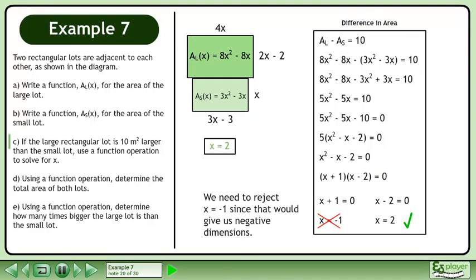We need to reject x equals negative 1 since that would give us negative dimensions. The only possible value for x is positive 2.